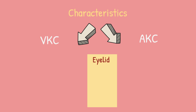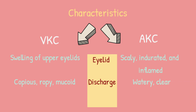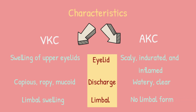Eyelids in vernal keratoconjunctivitis demonstrate swelling and ptosis, compared to atopic keratoconjunctivitis, which is characteristically scaly, indurated, and inflamed. While the discharge from vernal keratoconjunctivitis is copious, ropey, and mucoid, the discharge from atopic keratoconjunctivitis is clear and watery. The limbus in vernal keratoconjunctivitis frequently exhibits swelling and Horner-Trantas dots, whereas atopic keratoconjunctivitis has no limbal changes.